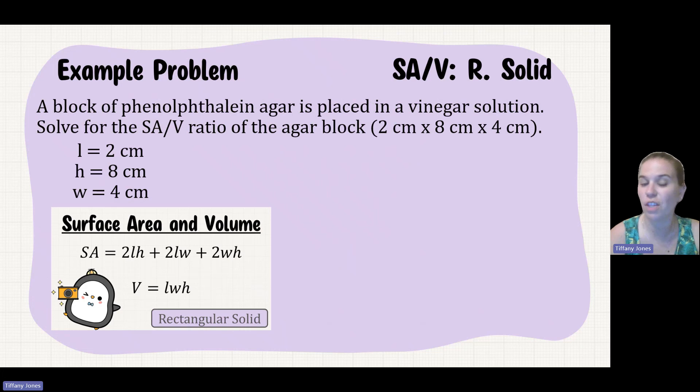Pause the video and see if you can solve this one yourself. A block of phenolphthalein agar is placed in vinegar solution. Solve the surface area to volume ratio of the agar block if it's 2 centimeters by 8 centimeters by 4 centimeters.